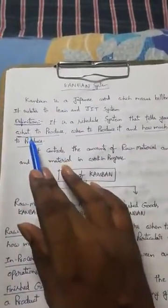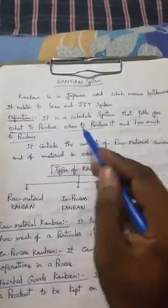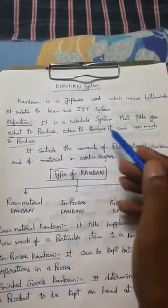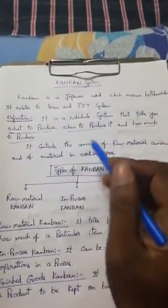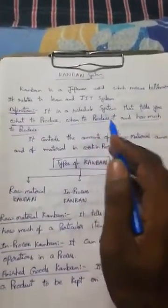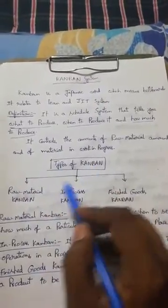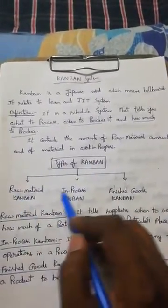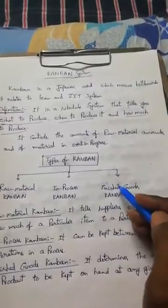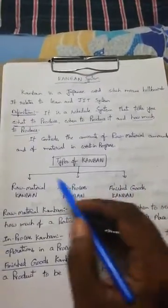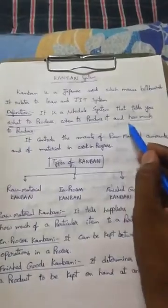There are three types of Kanban: Raw Material Kanban, In-Progress Kanban, and Finished Goods Kanban. Each type addresses what to produce, when to produce, and how to produce within their respective areas of the production process.